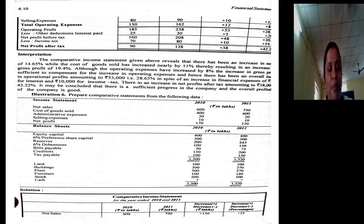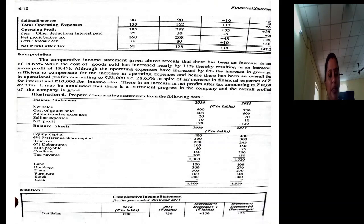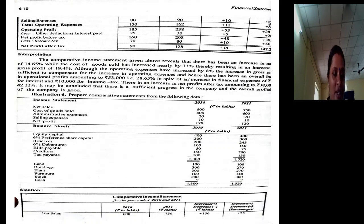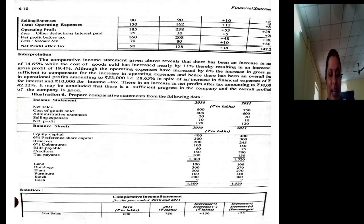Let us look at illustration 6: prepare a comparative statement from the following. Net sales is given, cost of goods sold only, administrative expenses, selling expenses — these are all operating expenses — and net profit. There are no non-operating expenses. In addition, a balance sheet is also given, so we need to prepare a comparative balance sheet as well. Equity capital, 6% preference capital, reserves, 6% debenture — debenture is a long-term liability. Bills payable, creditors, and tax payable are current liabilities.